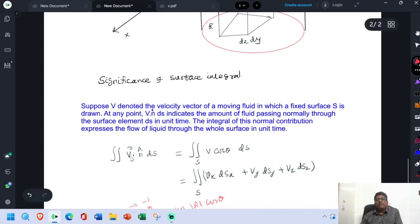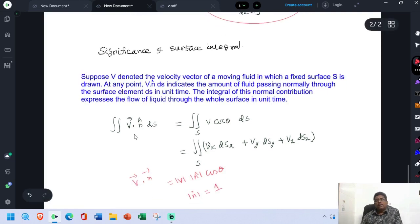If V be the velocity of the liquid, then integral V dot n cap into Ds equals V cos theta into Ds. You know that A dot B equals AB cos theta. Here vector V dot vector n cap, this unit vector, equals modulus of V into modulus of n cap cos theta. Whereas modulus of n cap is equal to unity, therefore V cos theta into Ds. Here V is a scalar.